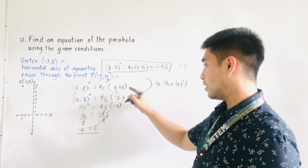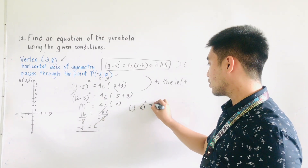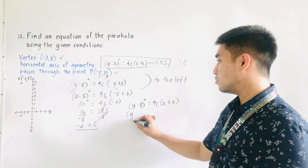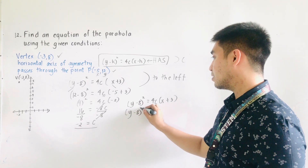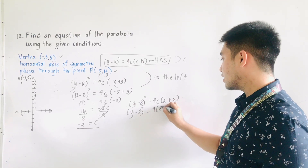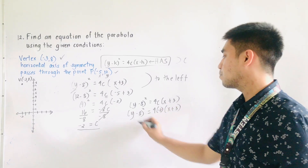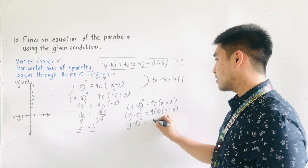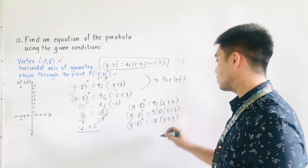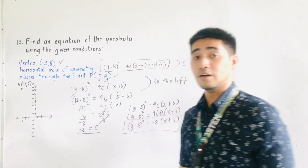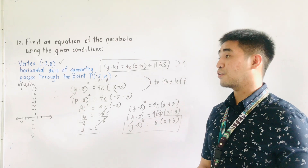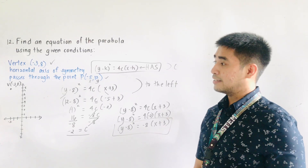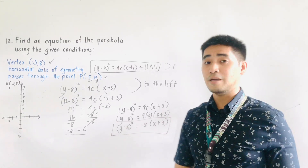Using the equation for this one, we'll now have y minus 8, quantity squared, is equal to 4c times x plus 3. Substituting the value of c, we get y minus 8, quantity squared, is equal to 4 times negative 2 times x plus 3. Simplifying: y minus 8, quantity squared, is equal to negative 8 times x plus 3. This is now the equation of the parabola, given the vertex at negative 3 and 8, horizontal axis of symmetry, and passing through the point negative 5 and 12.